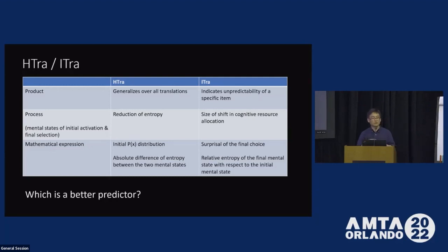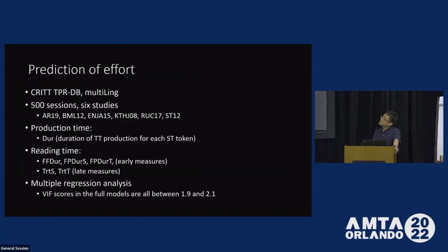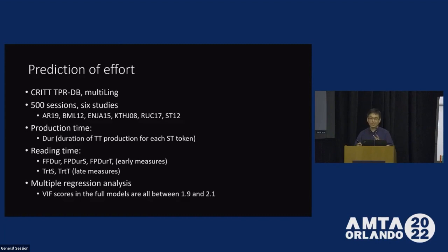A very interesting question which follows is: which one is a better predictor if we look at the data from an empirical perspective — in terms of predicting effort? I looked at the CRETE database in the multilink dataset and included 500 experimental sessions. The effort was measured by both production time and reading time. Production time is represented by the duration of TT production for ST token, so it's at the token level. Reading time looks at both the early measures and late measures of eye movement in the database. I did a multiple regression analysis — adding ITRA into the regression model and then adding EXTRA and comparing the base model with the full model — to shed light on how ITRA explains additional variance in production time and reading time.